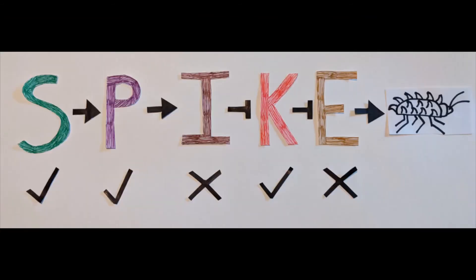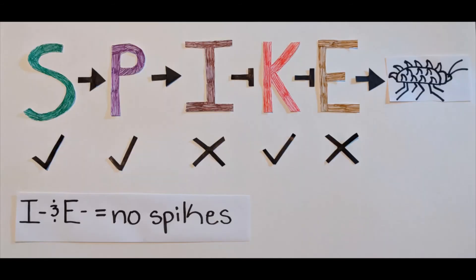For the third mutation, the I and E gene is removed. When this happens, S still activates P, but the P gene can no longer activate I. With I gone, nothing inhibits K, and without the E gene, the spikes cannot be produced. So when the I and E genes are removed, the cells do not produce spikes.